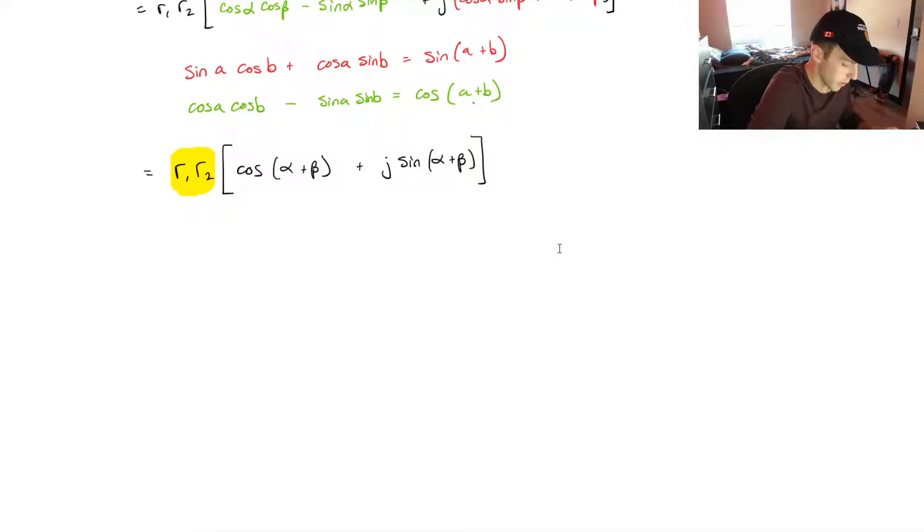And we've got the argument, or the angles, of the two complex numbers. Those will be added together. And we can just rewrite it in polar form if we know those two things. That we multiply the modulus together, and we're going to add the arguments.